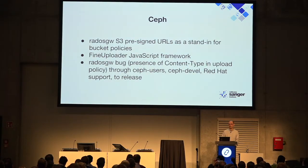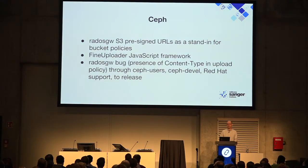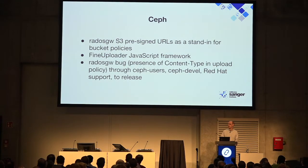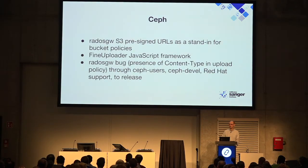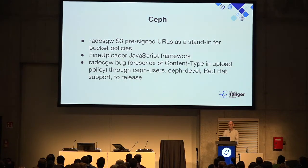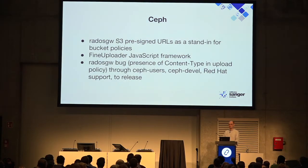It's not quite the same as Amazon S3 — there are some subtle differences. ACLs are there, but in the Jewel release we have, bucket policies are not. A developer wanted to allow effectively anonymous upload to a bucket, so we used pre-signed URLs with a JavaScript front end to generate them. It didn't work — and I personally had first-hand experience working with the developer, with the Ceph upstream, and with Red Hat to get the bug fixed and pushed through to release.